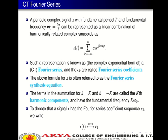Continuous-time Fourier series: A periodic complex signal with fundamental period T and fundamental frequency ω₀ = 2π/T can be represented as a linear combination of harmonically related complex sinusoids as X(t) = Σ(k=−∞ to +∞) Cₖ e^(jkω₀t). Such a representation is known as the complex exponential form of the continuous-time Fourier series, and the Cₖ are called Fourier series coefficients.